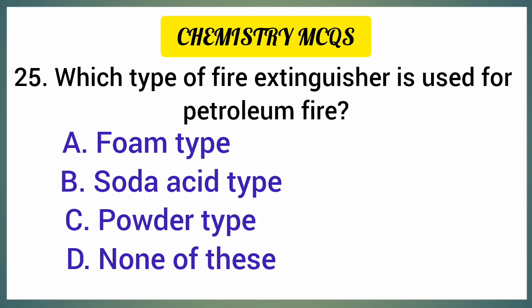Which type of fire extinguisher is used for petroleum fire? Correct option is option C.